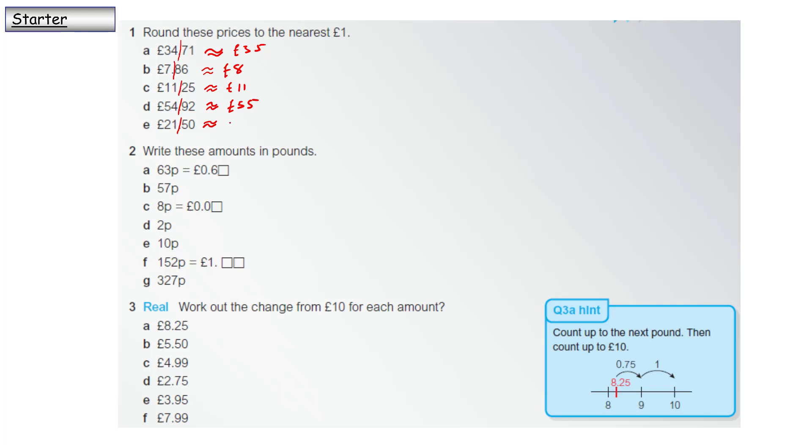Question two: write these amounts in pounds. 63 pence is £0.63, 57p is £0.57. 8p - we've got to be careful with this - is £0.08. 2p is £0.02, 10p is £0.10.